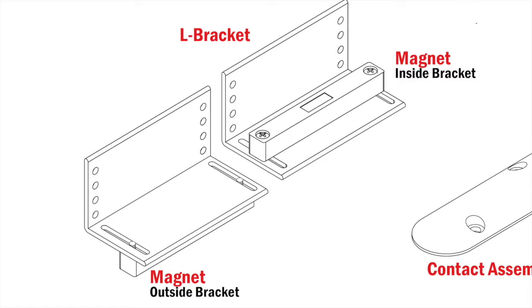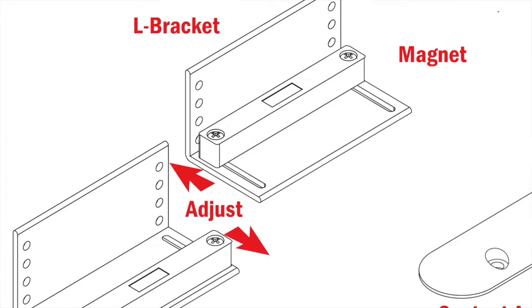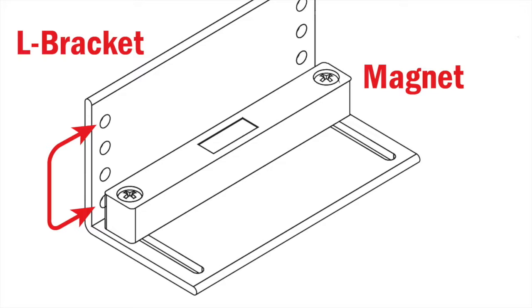The magnet can be positioned on the inside or outside of the bracket, or slid forward or backward in the slot to guarantee good contact with the contact assembly. These holes also provide flexibility when positioning the door switch.